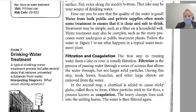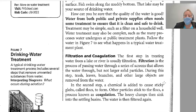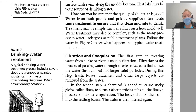Filtration and Coagulation. The first step in treating water from a lake or river is usually filtration — a process of passing water through a series of screens that allows the water through but not large or solid particles. During this step, trash, leaves, branches, and other large objects are removed from the water. In the second step, a chemical is added to cause sticky globs called flocks to form. Other particles stick to the flocks in a process known as coagulation. The heavy clumps then sink into the settling basin, and the water is filtered again.